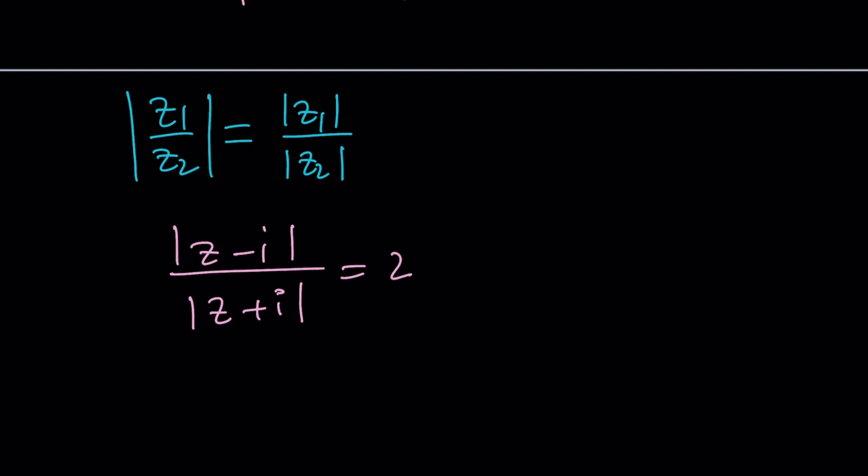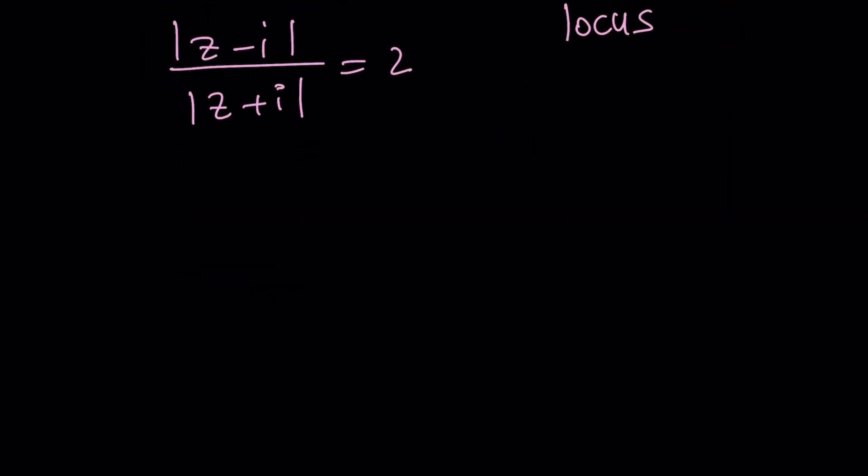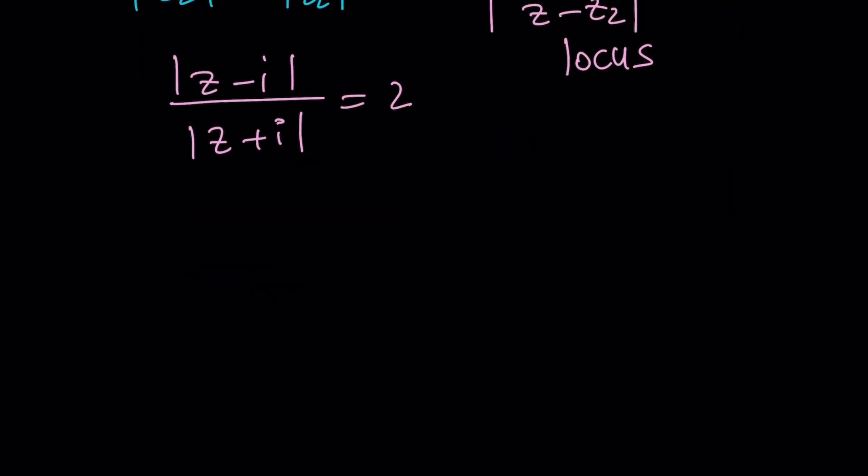So that kind of gives you something like this. Whenever I have something in general, like the absolute value of Z minus Z1 divided by Z minus Z2 equals a constant, this represents something special. We call these problems locus problems, which means the set of points that satisfy this type of equation. And they basically form a really nice picture, which you'll see in a little bit. So let's go ahead and work this out. I can go ahead and cross multiply definitely. And this is super helpful.